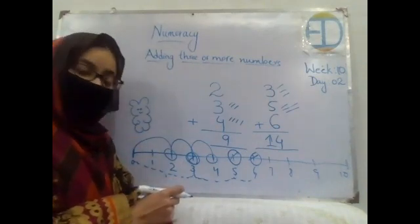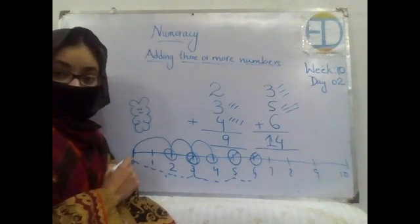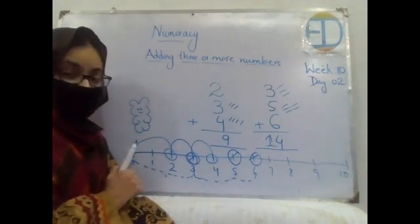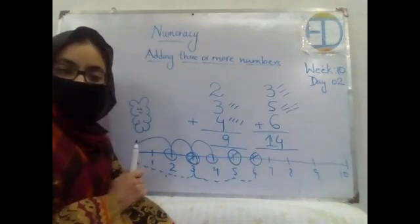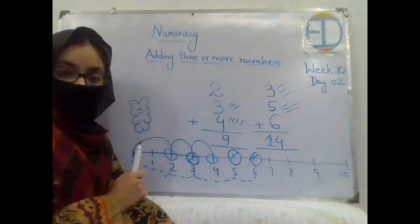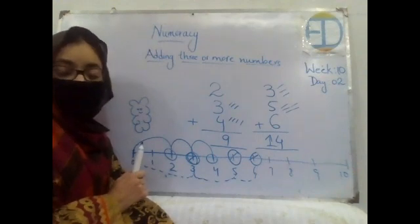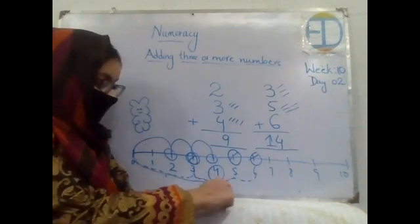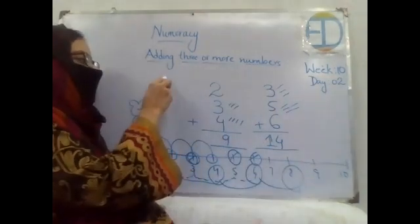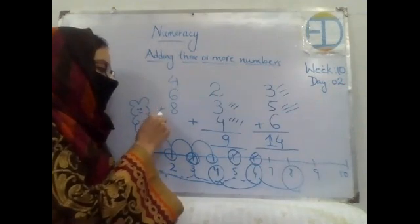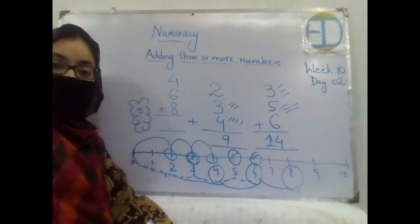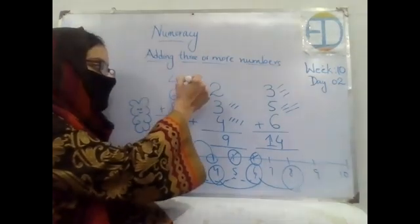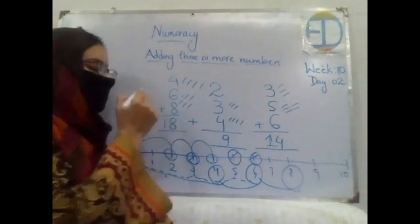Now let's practice again. You can choose any three numbers of your own choice and add them. What are your favorite numbers? Alize says four, six, and eight. Hurry up Alize — add four, six, eight and tell me the answer. Eight, nine, ten, eleven, twelve, thirteen, fourteen, fifteen, sixteen, seventeen, eighteen. So the answer is eighteen.